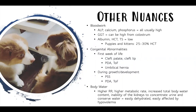Always assess patients for congenital abnormalities before anesthesia. A cleft palate or lip can result in aspiration pneumonia. PDA or tetralogy of Fallot puts patients at very high cardiovascular risk. An umbilical hernia requiring emergency surgery may be accompanied by other undetected congenital abnormalities. During growth and development, portosystemic shunts, PDAs, and tetralogy of Fallot can also present.